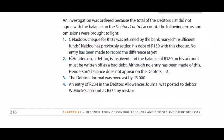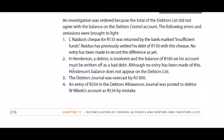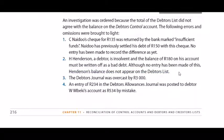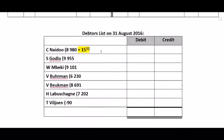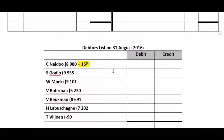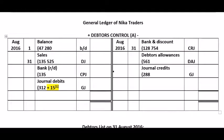Adjustment 2: H Henderson, a debtor, is insolvent and the balance of 180 Rand on his account must be written off as a bad debt. This is done in the general journal and it must still be done. Although no entry has been made, Henderson's balance does not appear on the list. So we don't have to do anything to the list because Henderson isn't on it — and he shouldn't be, because we're writing his debt off. The only place this will be recorded is in the debtors control account.